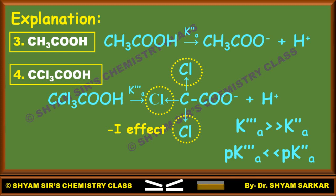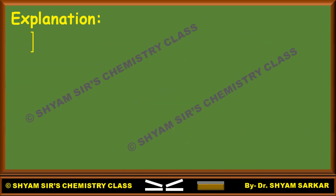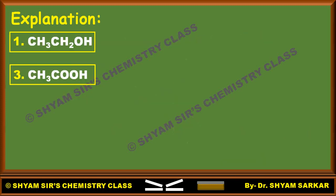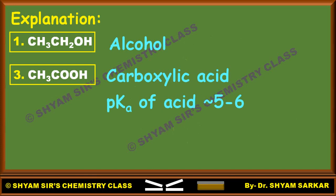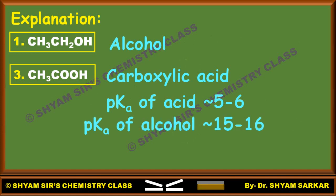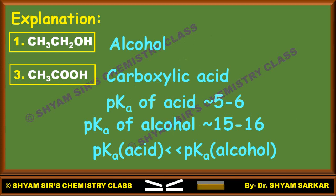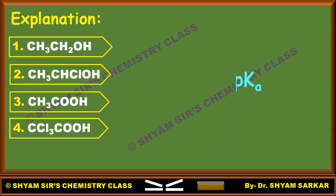We have now compared pKa values individually within the two alcohols and within the two acids. Now let us compare between alcohols and acids. The pKa of a carboxylic acid is around 5 to 6, while the pKa of an alcohol is around 15 to 16. So pKa of acid is much much less than pKa of alcohol.